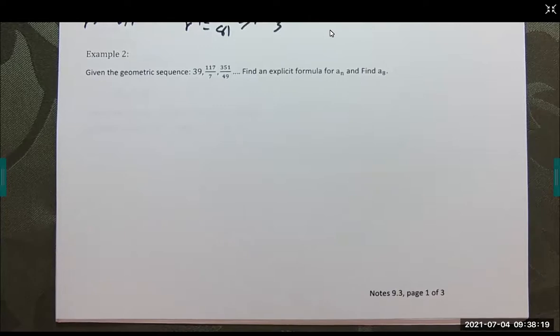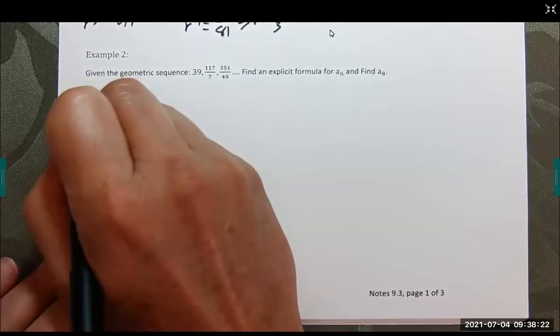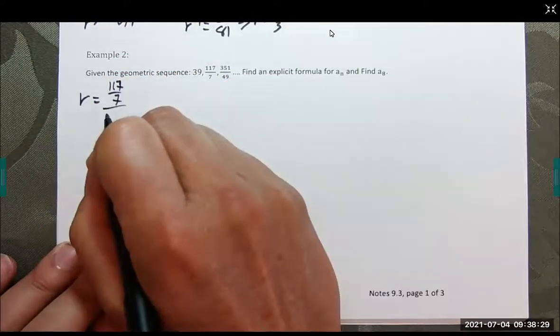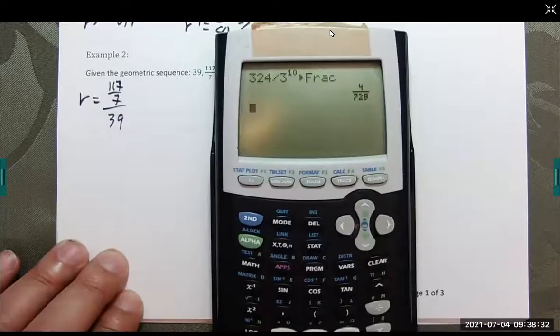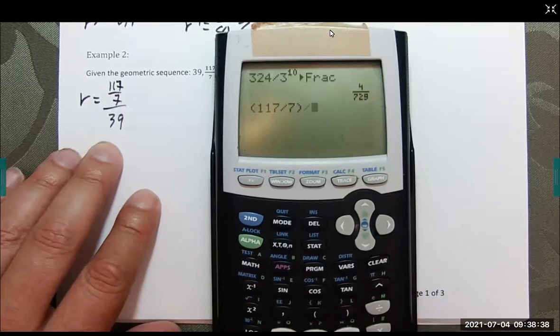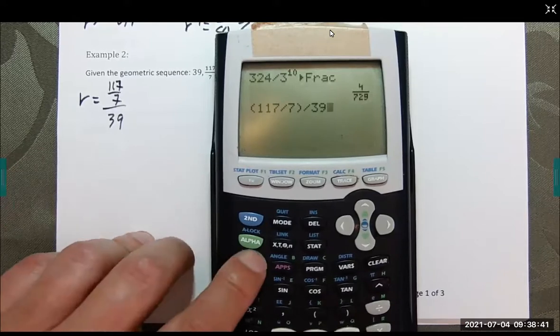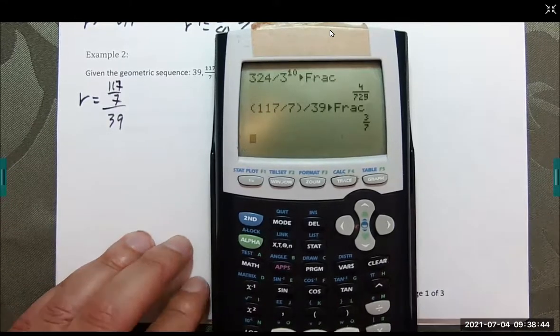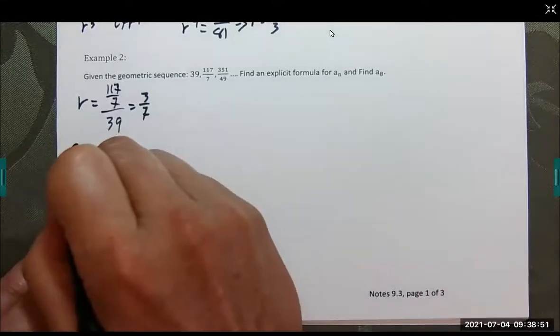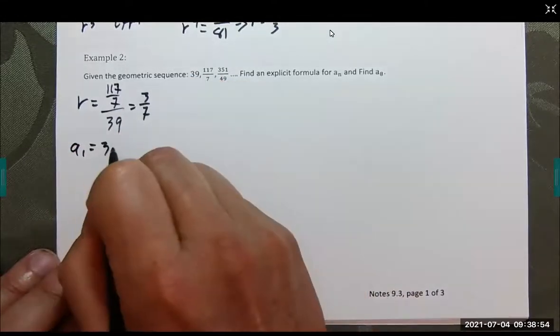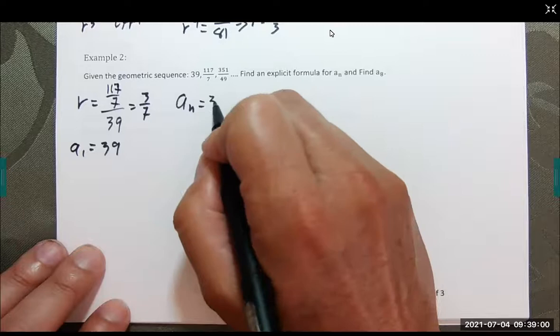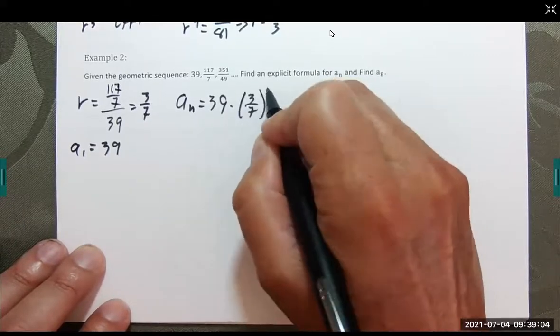Let's work out this next one. R is going to be 117 over 7 divided by 39. That gives us 3 over 7. We have a sub 1, which is our first term, 39. That's going to give us our general term: a sub n equals 39 times (3/7) raised to the n minus 1 power. Here is our explicit formula.